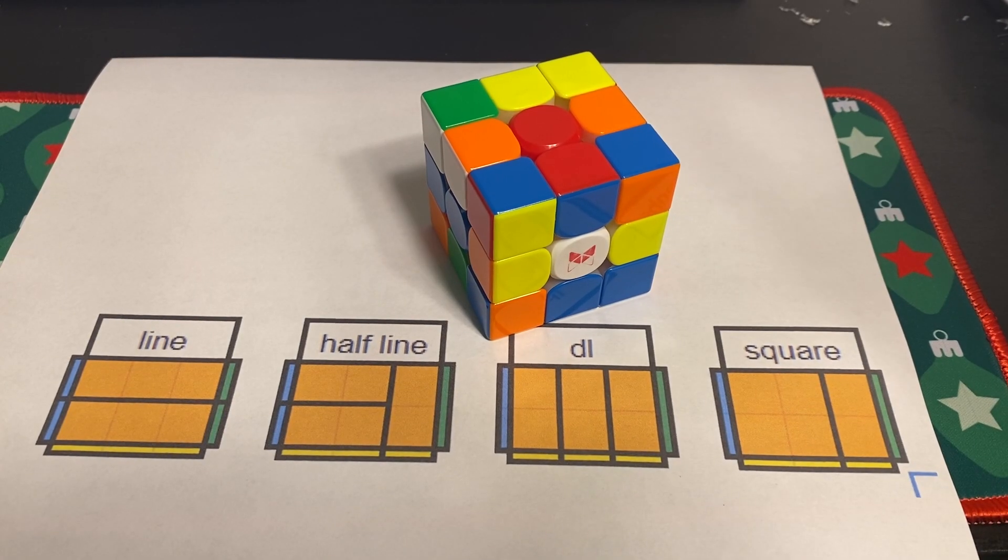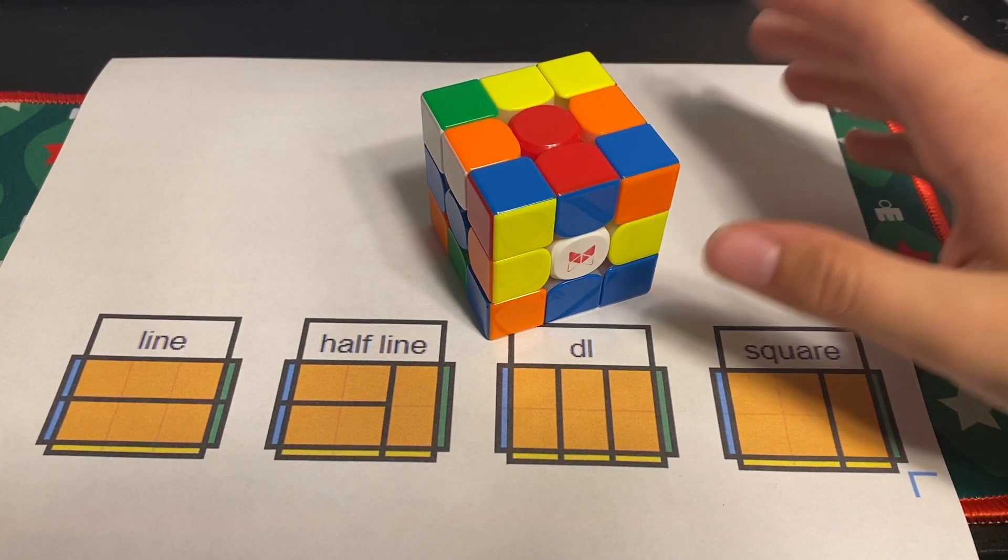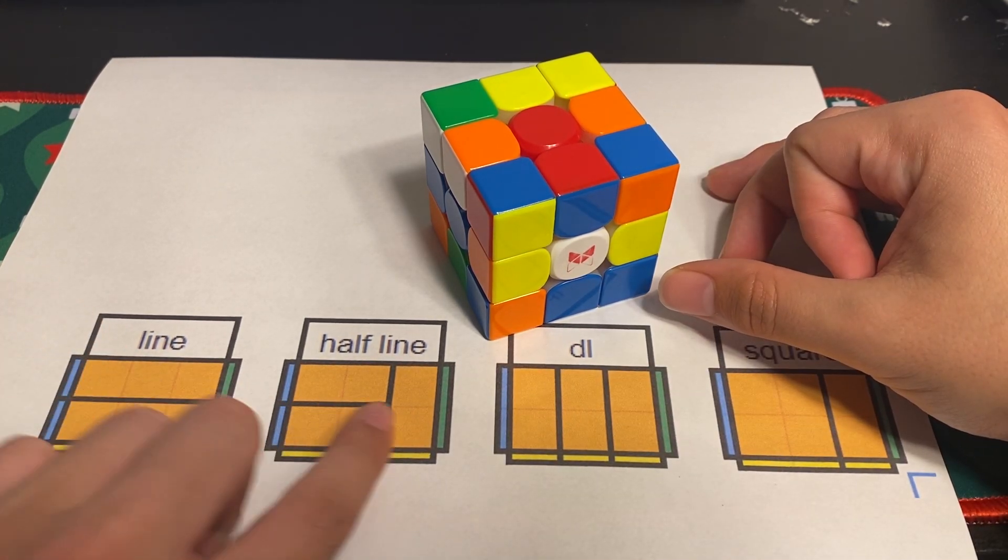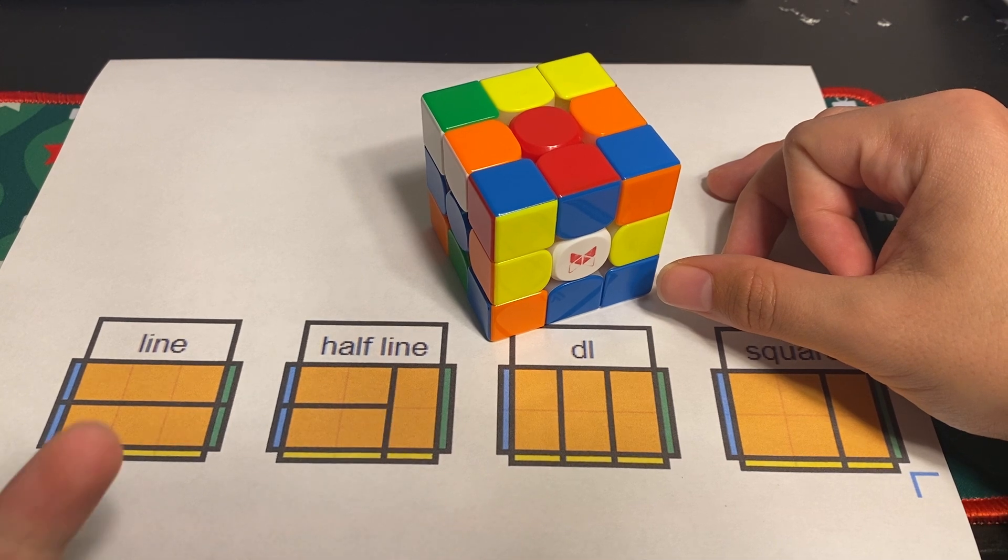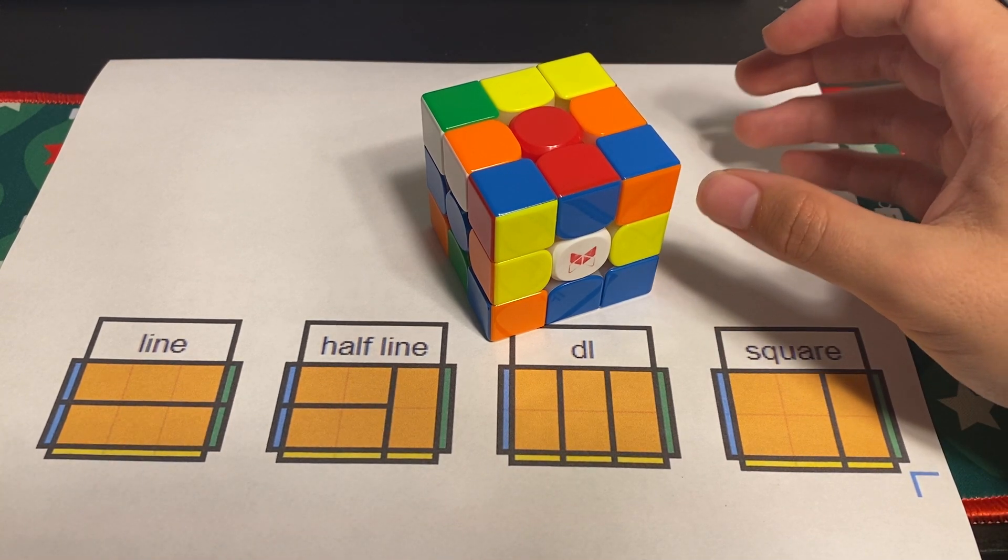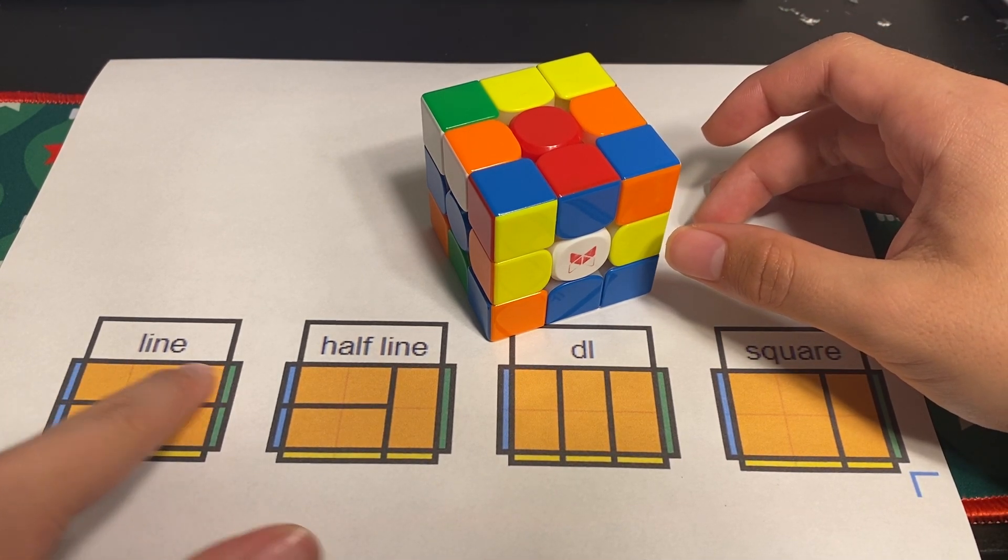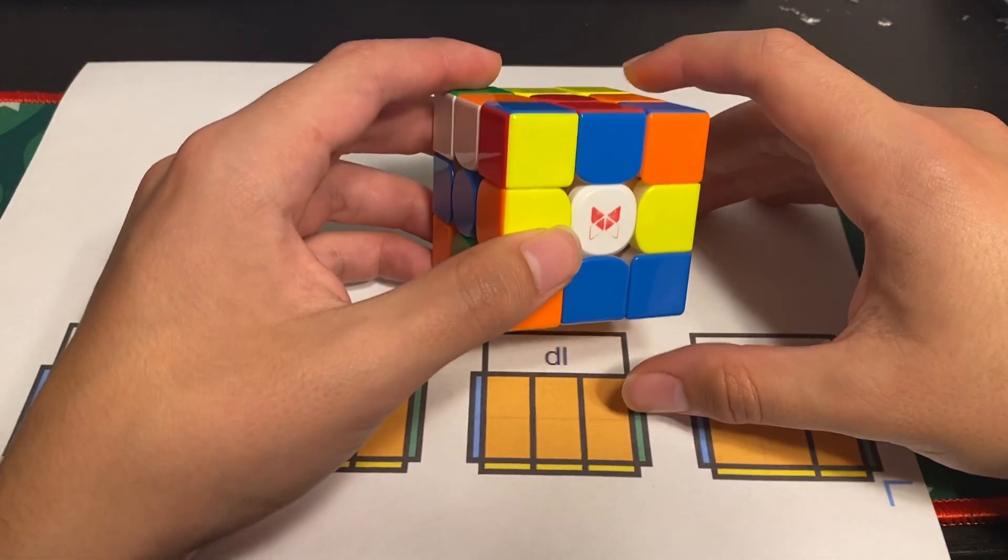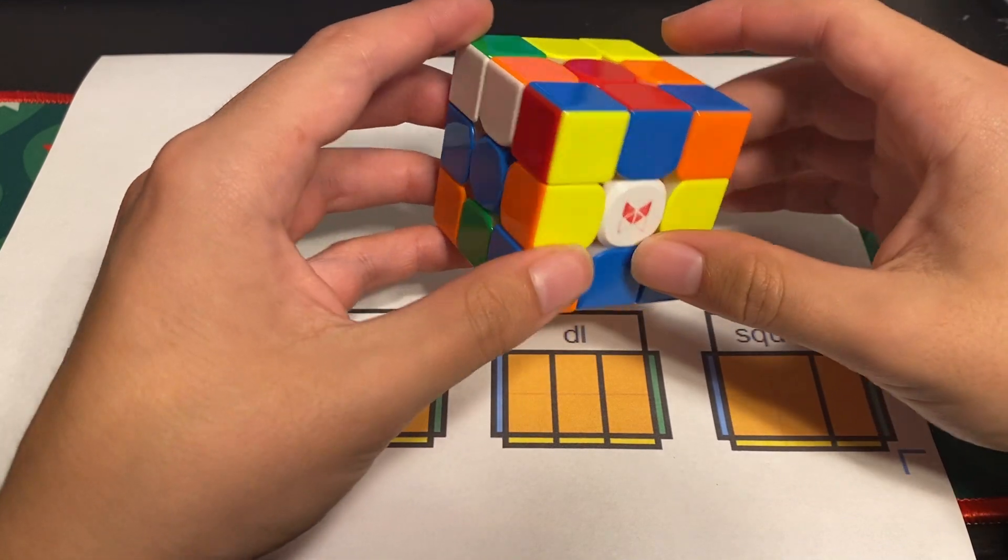The final type of first block we're going to go over is the line. This is what a line block looks like. As you can see it's a half line except it's a full line. So we have this top row and this bottom row.